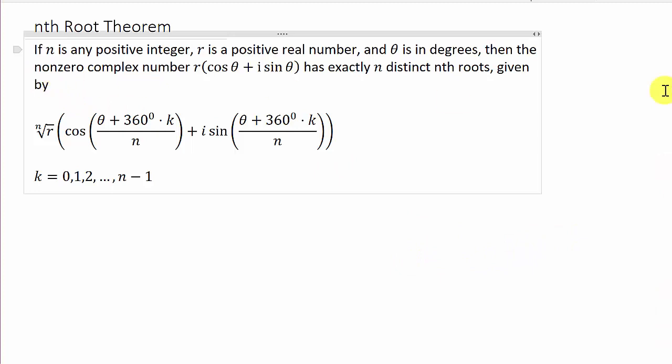So let's come back over here to the nth root theorem. It says if n is any positive integer, R is a positive real number, and theta is in degrees, then the non-zero complex number R times cosine theta plus i sine theta has exactly n distinct nth roots. Given by the nth root of R times the cosine of theta plus 360 times k over n, plus i sine theta plus 360 times k over n, where k goes from 0 to n minus 1. And I'll explain this more as we're working the examples, what k is and all that stuff.